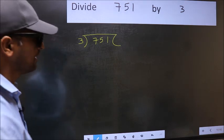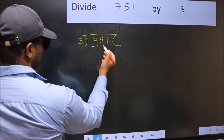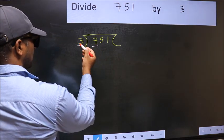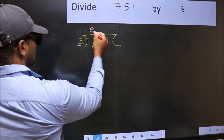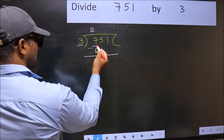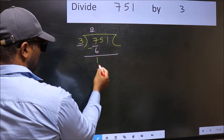Next. Here we have 7 and here 3. A number close to 7 in 3 table is 3 times 2 equals 6. Now you should subtract. 7 minus 6, 1.